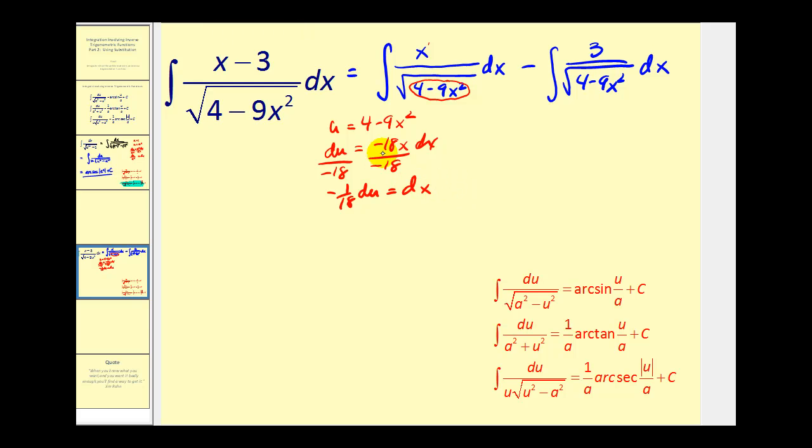So we have negative one eighteenth du equals dx. So while we're here, let's go ahead and rewrite this in terms of u. Again, x dx is equal to negative one eighteenth du, and then this is equal to u. So we have one over the square root of u, which is equal to u to the negative one half power.